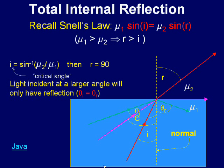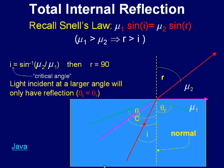Let us now discuss a problem based on this. There is a swimming pool with a coin that can be seen. There is water in the pool. The question is, can the person standing on the edge of the pool be prevented from seeing the light by total internal reflection?